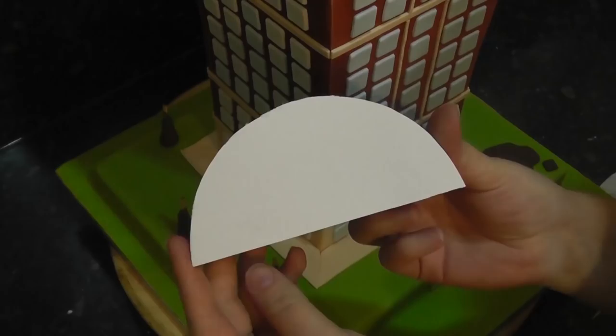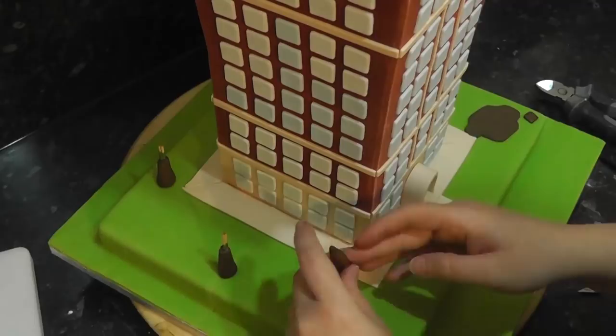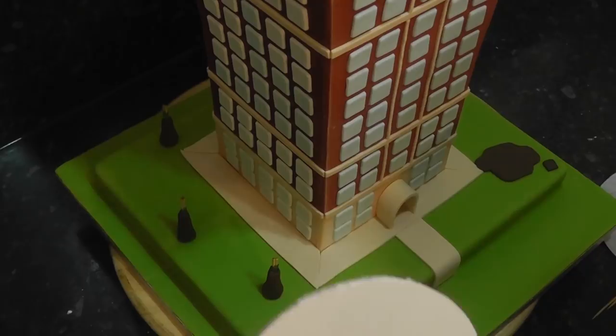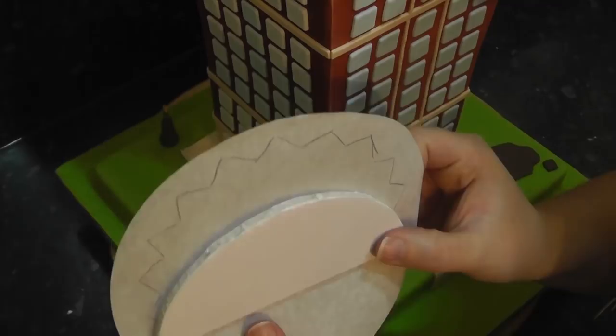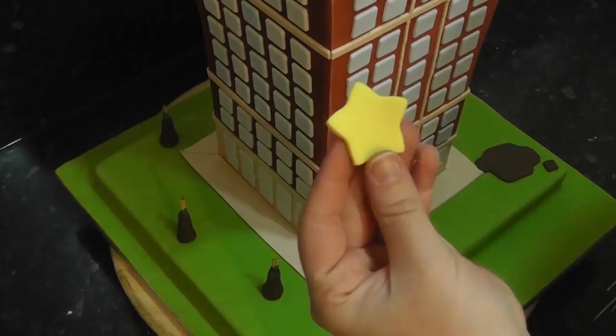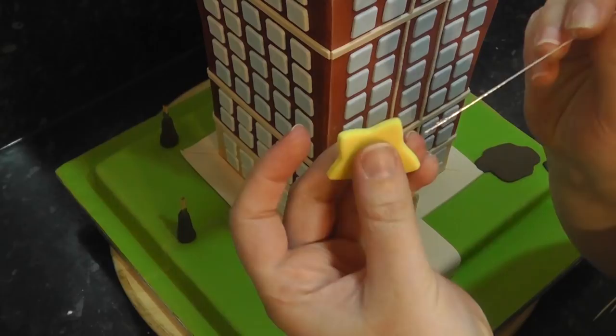For the sunburst topper I'm using a semi-circle of foam core. Again this is only going to house wire so it's a good medium to use. Sketch your sunburst shape onto paper making sure it's larger than your foam core. To make the wired stars cut out star shapes from yellow paste with tylo added and slowly insert a wire that's been dipped in piping gel. Put these aside to dry flat.